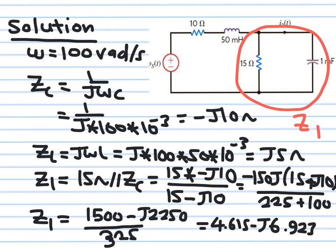Correcting the typo: the capacitor is −j10. Multiplying numerator and denominator by the conjugate (15 + j10), the denominator becomes 15² + 10² = 325. The numerator gives 1500 − j2250. Dividing by 325 gives Z1. This Z1 is in series with Z_L = j5 and the 10 Ω resistor, so the total input impedance Z_in = Z1 + j5 + 10.